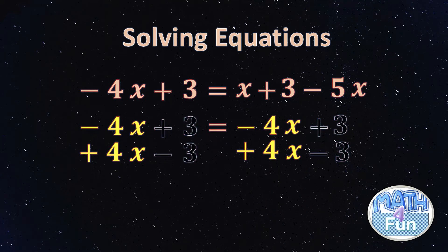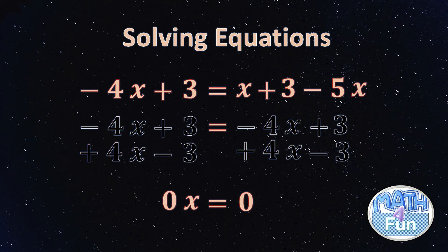+3 and -3 would give you 0. Also, -4x and +4x will give you 0. So you're left with 0x on the left side equals 0, or 0 equals 0x on the other side. I'm writing it in this form just to show you why we get infinite number of solutions.